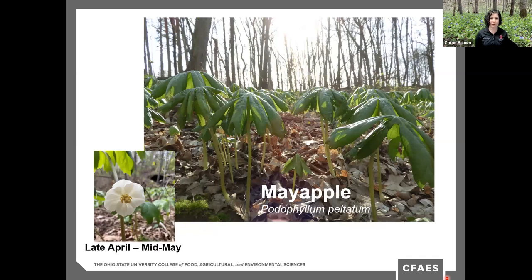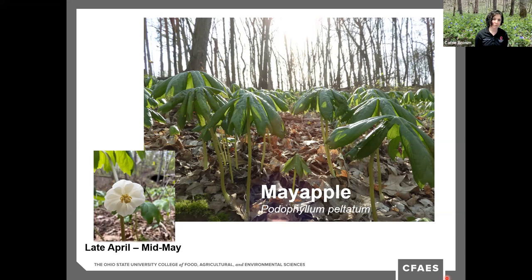Mayapples are fairly common and commonly recognized for their distinctive leaf. They typically grow in large colonies from a single root in open deciduous forest and shady fields, and will persist even at sites that have been logged. Although the flowers are quite showy, they are short-lived, usually hidden by the leaves, and visited by bumblebees and other long-tongued bees. If pollinated, the flowers develop into small fleshy fruits — the mayapples — eaten by box turtles and other wildlife that disperse their seeds.